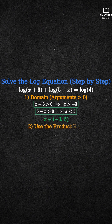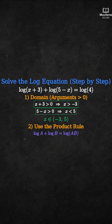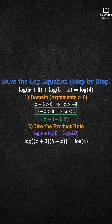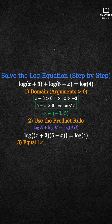Step 2: Combine the two logarithms using the product rule. Log of a plus log of b equals log of (a times b). We apply it to the left side; that becomes log of the product (x plus 3) times (5 minus x), equals log of 4.